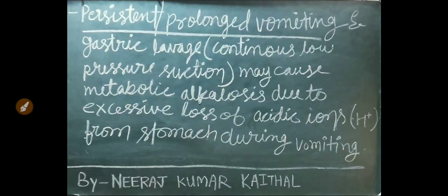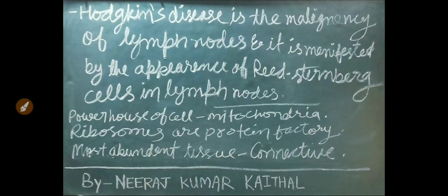Persistent or prolonged vomiting and gastric lavage may cause metabolic alkalosis due to excessive loss of acidic ions from the stomach. Hodgkin's disease is a malignancy of the lymph nodes, manifested by the appearance of Reed-Sternberg cells in the lymph nodes. The powerhouse of the cell is mitochondria. Ribosomes are the protein factory. The most abundant tissue is connective tissue.